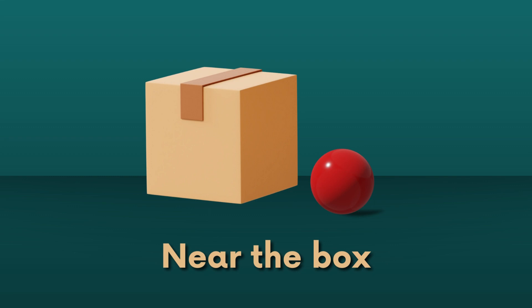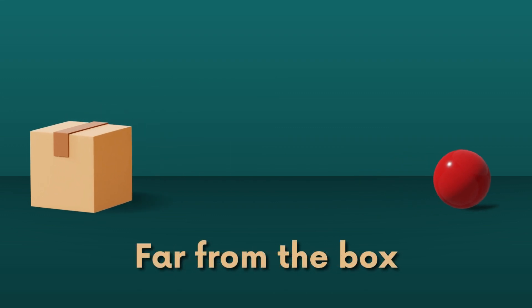The preposition 'near' denotes that an object is located in close proximity or a short distance away from another object. For example, 'the ball is near the box' means that the ball is located close to the box. The preposition 'far from' signifies that an object is positioned at a considerable distance or a significant gap exists between two objects. For example, 'the ball is far from the box' means that a significant gap exists between the ball and the box.